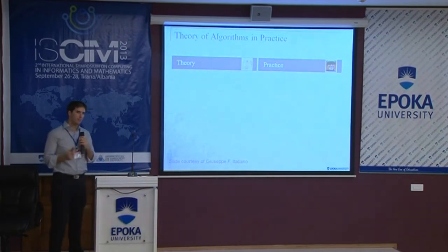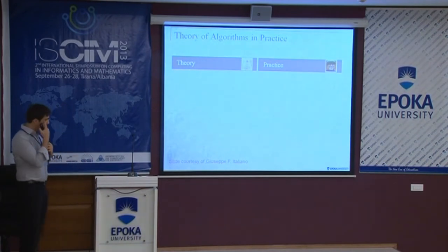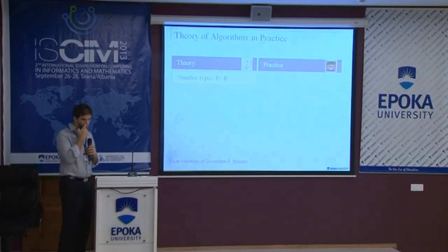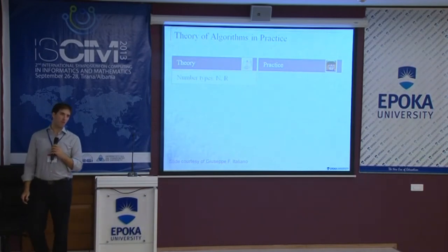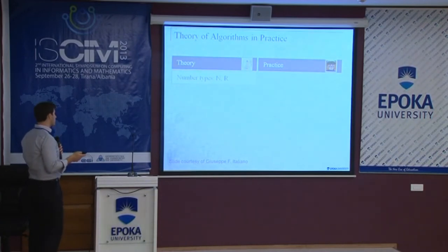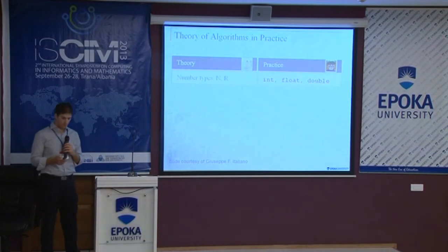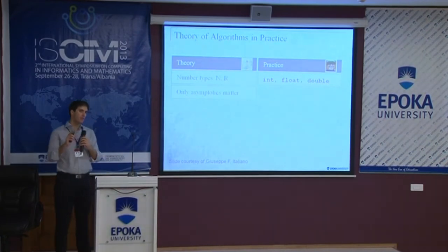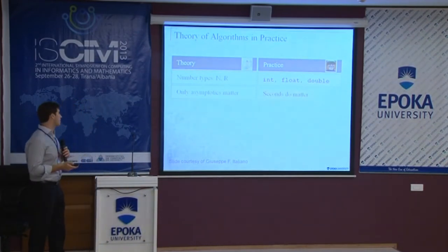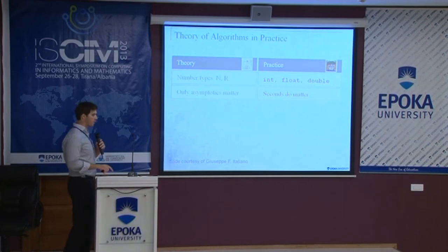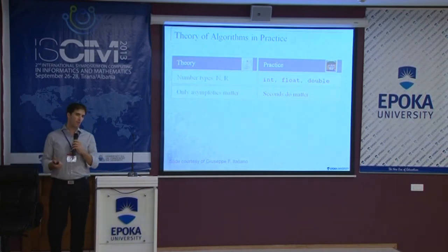Let's see what happens in theory versus what we observe in practice. In theory, we use real or natural numbers. In practice, we have finite precision. In theory, only asymptotics matter — we use big-O notation. In practice, seconds matter, and seconds are affected by constants. Constants are hidden in our theoretical analysis, but when we do an implementation, we really want to know about them.